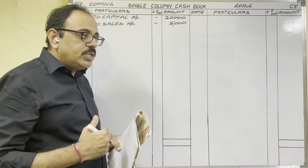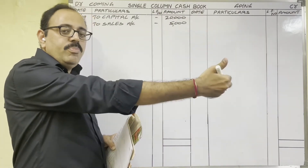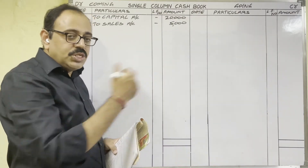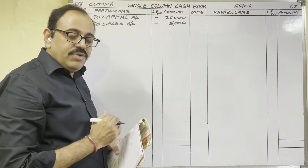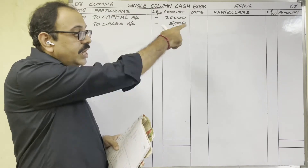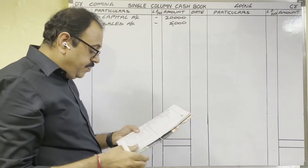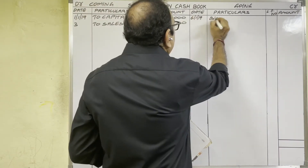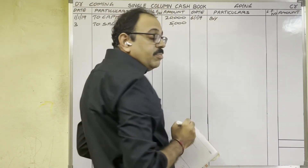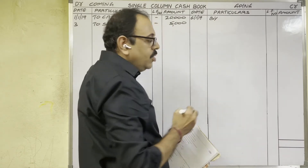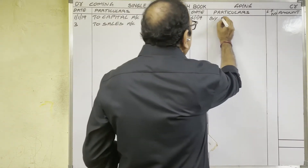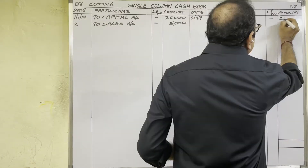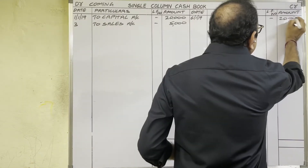6th January: cash paid into bank 2,000 rupees. Think from the firm's point of view — the firm deposited money into the bank, so cash is going from the firm. Credit side we should write. On the 6th date write: 'By Bank Account', 2,000 rupees.